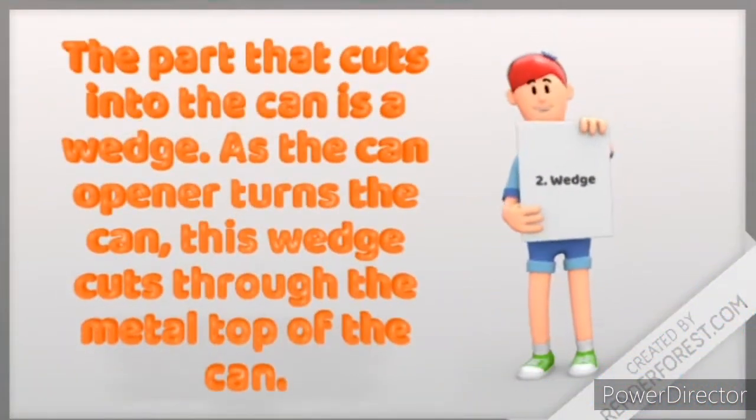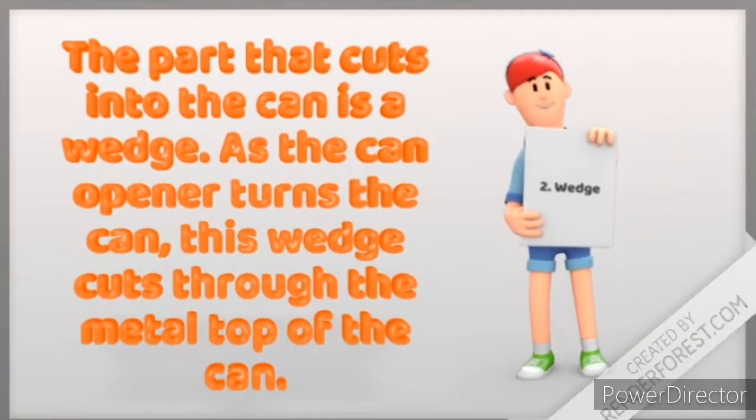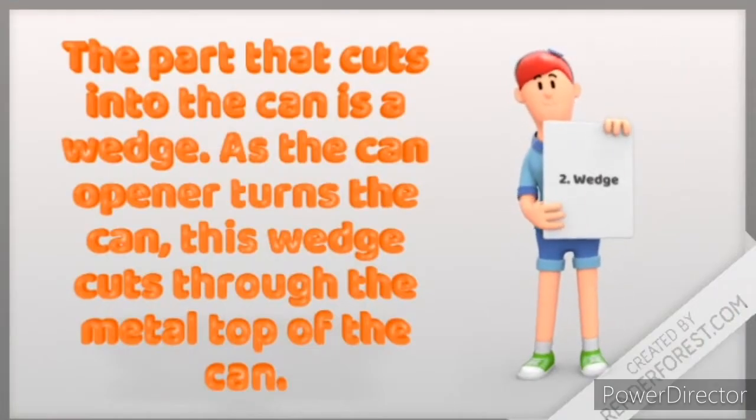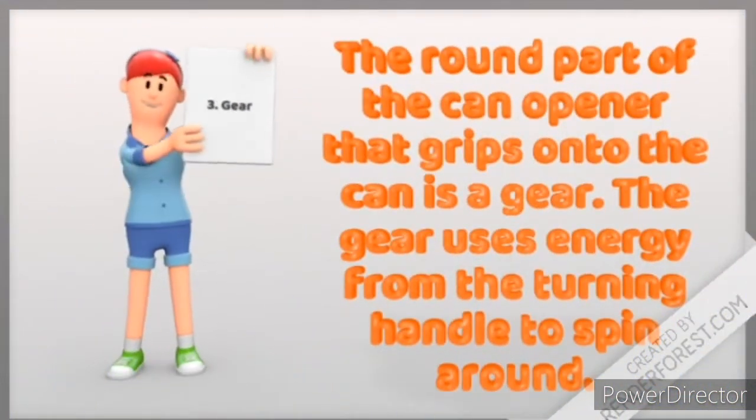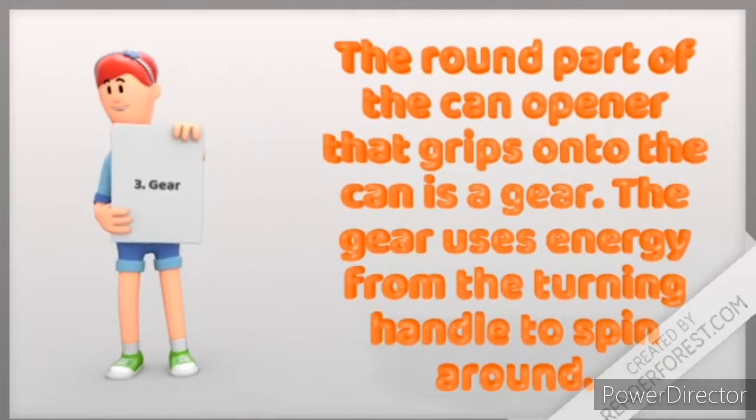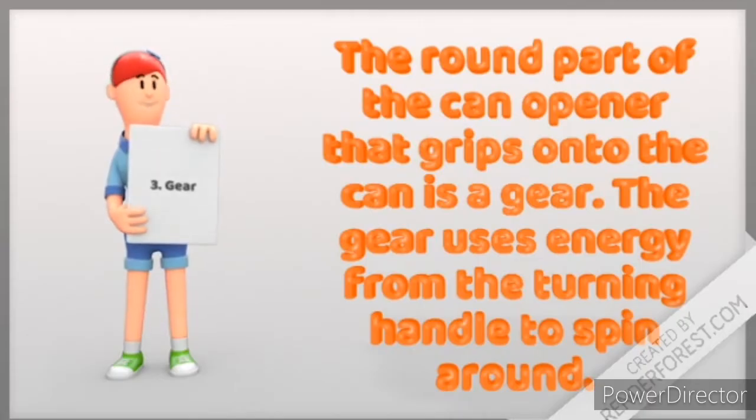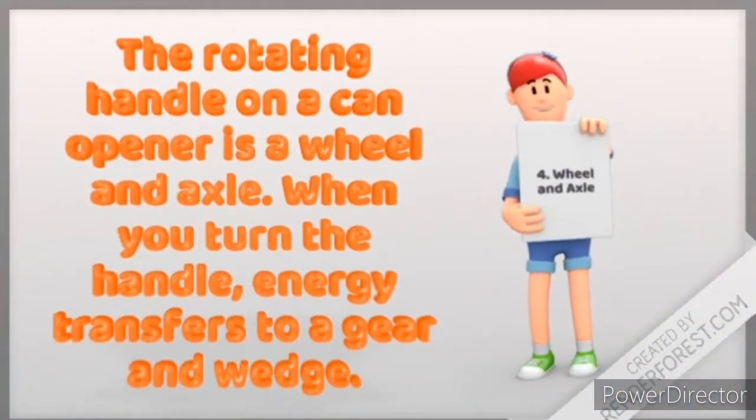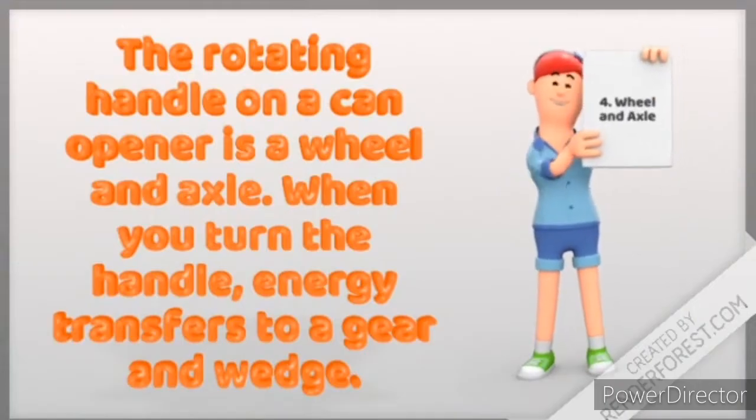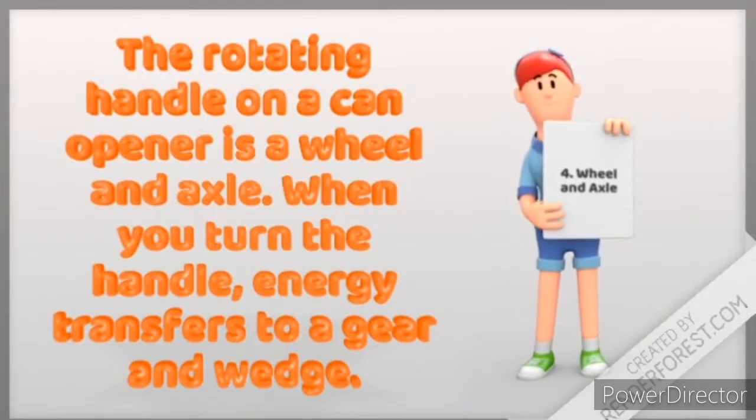Two, the part that cuts into the can is a wedge. As the can opener turns the can, this wedge cuts through the metal top of the can. Three, the round part of the can opener that grips onto the can is a gear. The gear uses energy from the turning handle to spin around. And finally, the rotating handle on a can opener is a wheel and axle. When you turn the handle, energy transfers to a gear and a wedge which rotate and open the can.